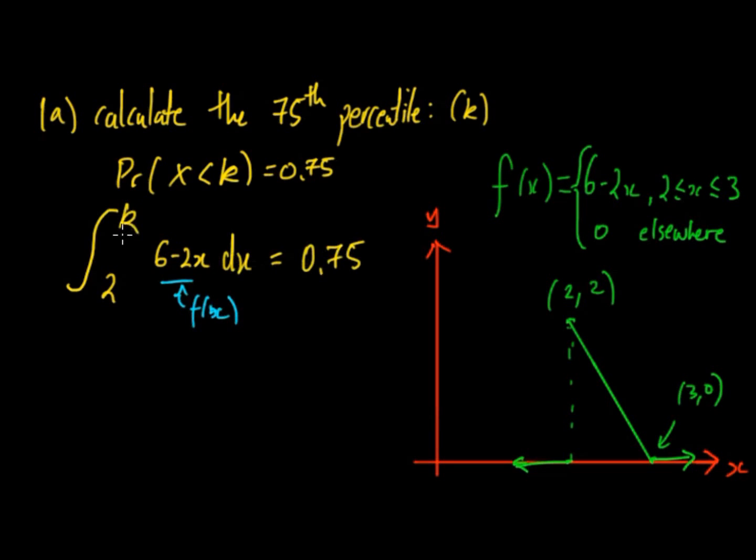So that's equivalent to the integral of 6 minus 2x dx and that has to equal 0.75. We have K and it's less than and we don't have to worry about 0 because that's elsewhere. So we're looking at the lower limit. That's where that 2 comes in because that's the lower limit.